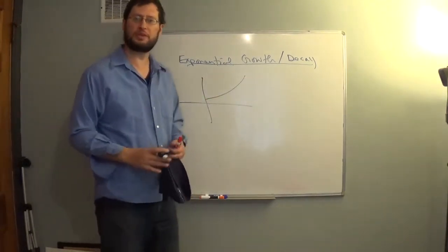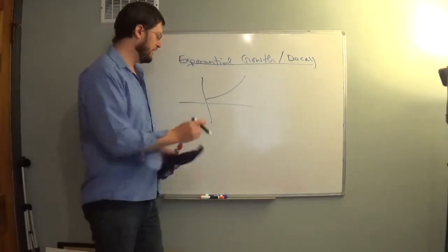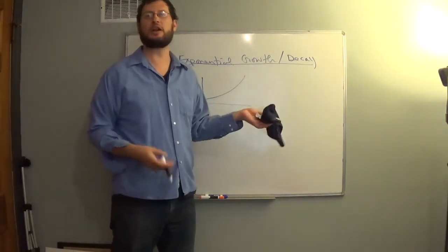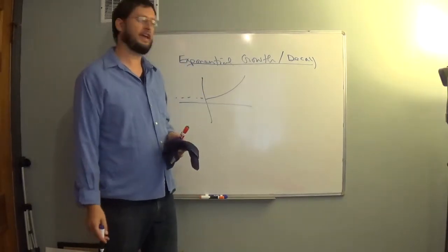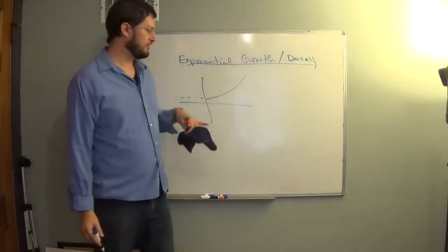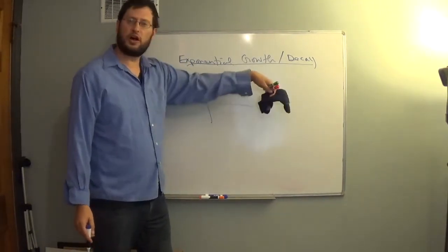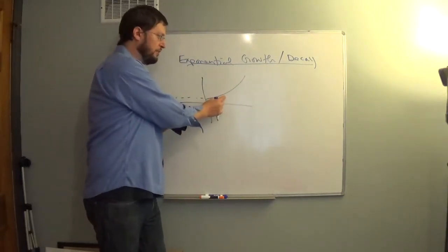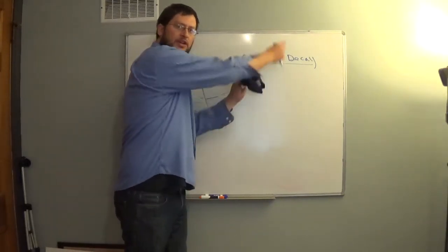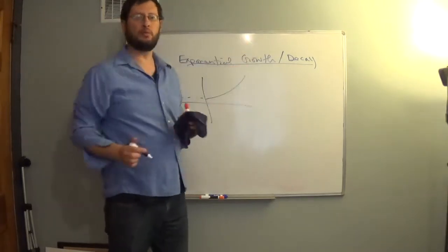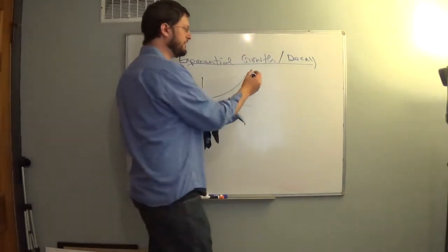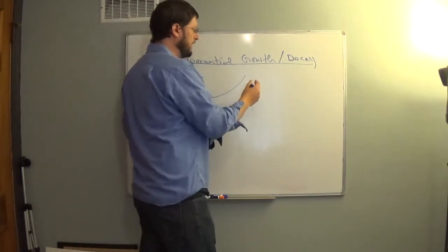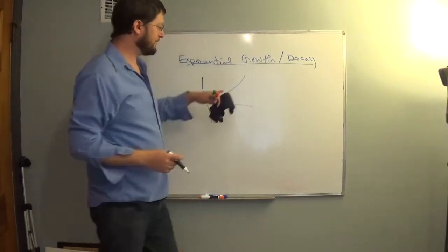It's called exponential growth because it follows an exponential function — e to the x, or a version of e to the x. As time goes on, if we look at a five-year period early on, it would grow just a little bit, but a five-year period way over here is going to grow way more. So these things are generally an exponential function.